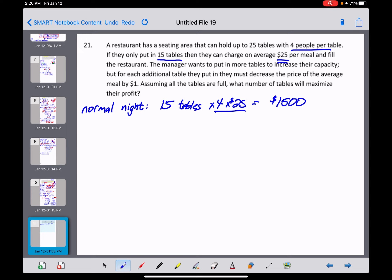Now, what they're debating about doing is putting out more tables, but they tell us right here that if they put out more tables, they're going to have to charge less for each meal. Maybe people feel like the ambiance isn't quite as nice at that restaurant. So that's what we're trying to do here.